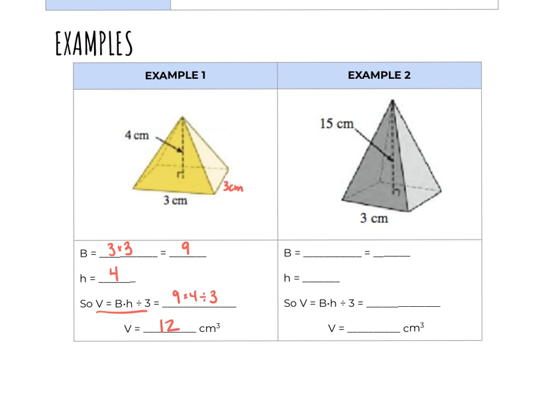In the next example, I again have a square base with side length of three centimeters. To find the area of that base, I would do three times three, which is nine.